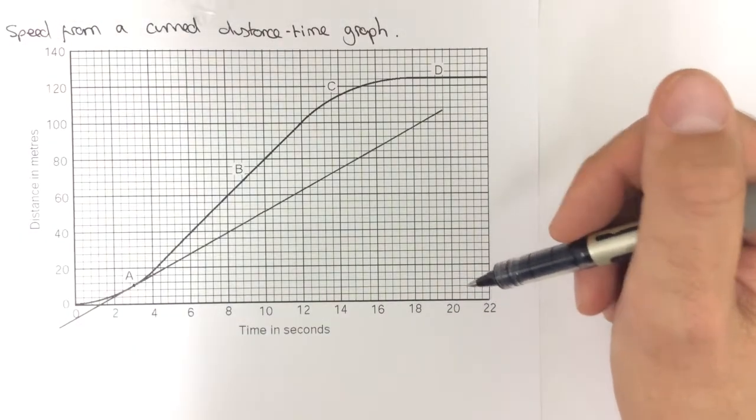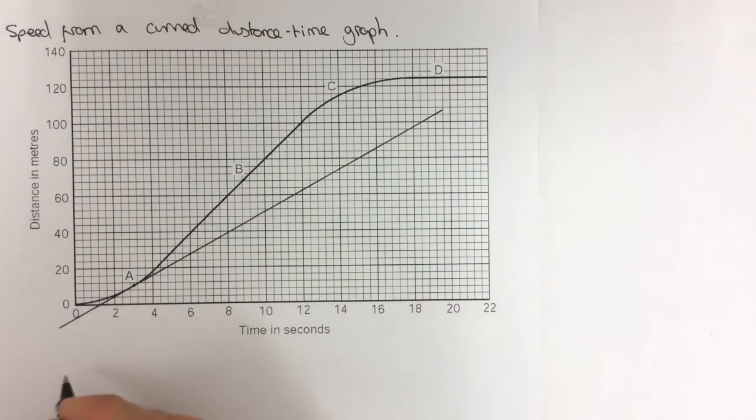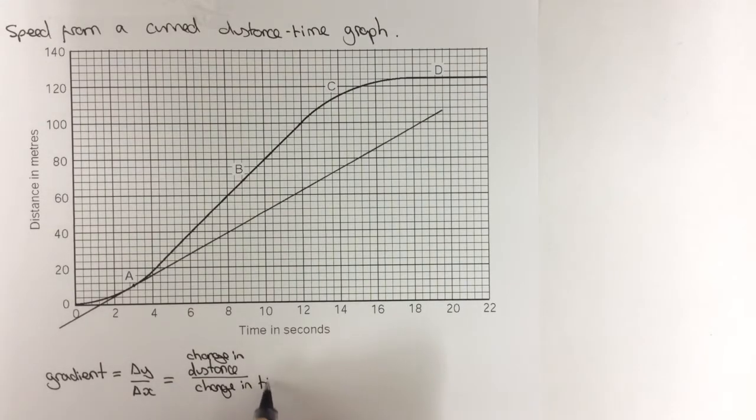So, if you remember from before, the gradient is equal to the change in y over the change in x, or the change in distance divided by the change in time. And so, I need to pick two points to find the gradient between.